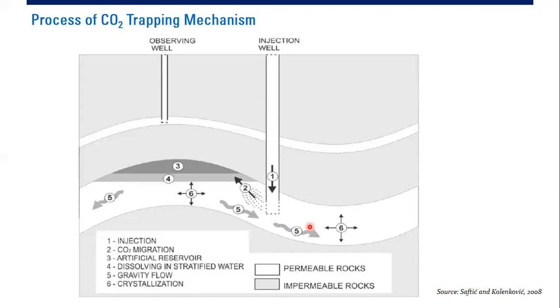Or we can also call it crystallization. And the crystallization will trap the CO2 permanently because it will change the supercritical CO2 to be minerals that will be deposited on the rock surface, and it will trap the CO2 permanently within the reservoir zone.